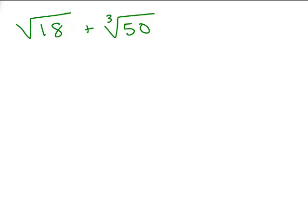Unless both of them happen to be whole numbers, for instance, if 18 was a perfect square and 50 was a perfect cube. But it's not, but we can simplify this a little bit.